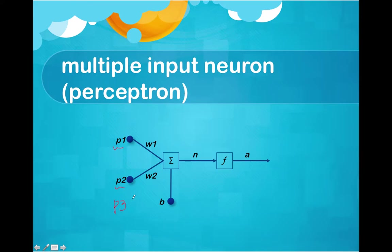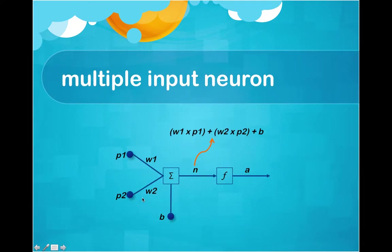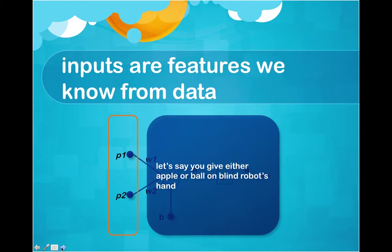The calculation is very similar to the single input neuron. We multiply P1 with W1, plus P2 times W2, and eventually add the bias. So the net input is W1*P1 plus W2*P2 plus bias, and this goes to the activation function. If this value is over or equal to the threshold it returns a high value, or it returns a lower value if this value is lower than the threshold.